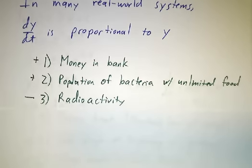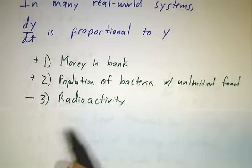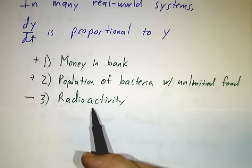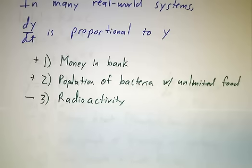There's radioactivity. If you have a lump of radioactive material, the rate at which the atoms disintegrate is proportional to how many atoms you already have there. You get twice as much uranium, you'll get twice as many disintegrations.